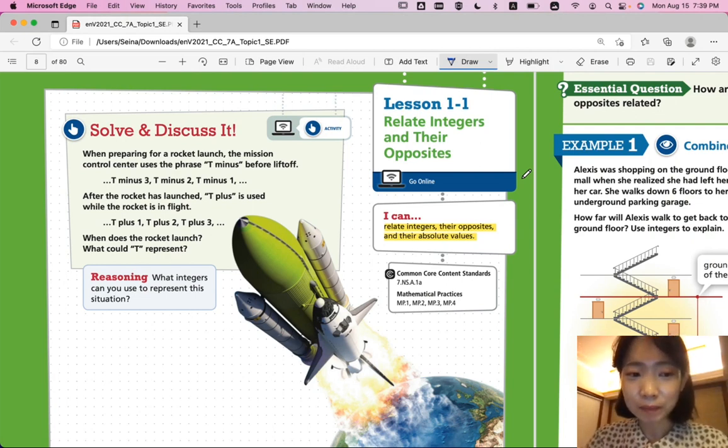Let's look at solve and discuss it. When preparing for a rocket launch, the Mission Control Center uses the phrase T-minus before liftoff. T-3, T-2, T-1. After the rocket has launched, T-plus is used while the rocket is in flight. T-plus-1, T-plus-2, T-plus-3. When does the rocket launch? What could T represent?